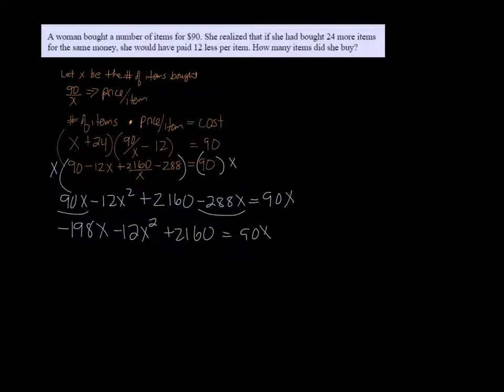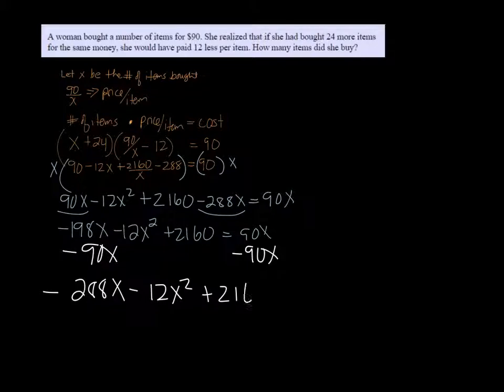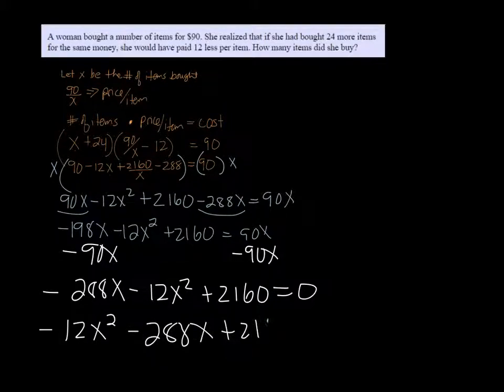Now to solve a quadratic equation, we need one side to be zero. So we need to subtract this 90X on both sides. So we get minus 198 subtract 90 is negative 288X. Minus 12X squared plus 2160 equals zero. Putting it in the correct order, minus 12X squared minus 288X plus 2160.